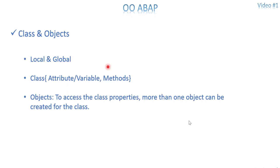The very first terms in object oriented are class and object — everything is related to class and objects. These can be classified into local class and global class. A local class is whatever you develop in SE38, and a global class is what you develop in SE24. It's the same as the difference between creating a structure in SE38 versus SE11 — SE11 is global and accessible from anywhere. Similarly, SE24 is global and can be accessed from anywhere.